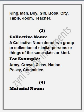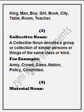For example: army, crowd, class, nation, policy, committee. یہ ساری چیزیں واحد نہیں ہیں — army میں کافی سارے لوگ ہوتے ہیں، crowd یعنی ہجوم میں بھی کافی سارے لوگ ہوتے ہیں، class میں بھی کافی ساری تعداد یعنی بچوں کی تعداد ہوتی ہے، nation میں overall.